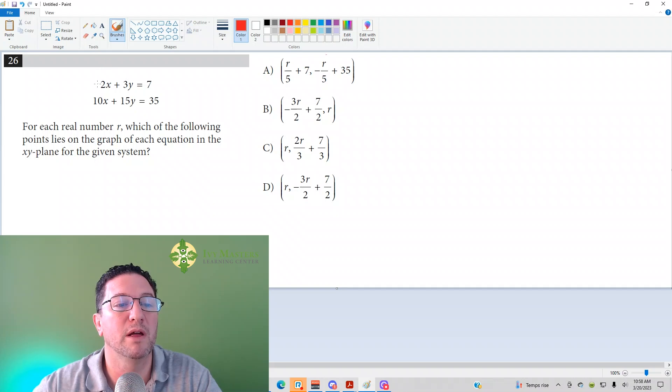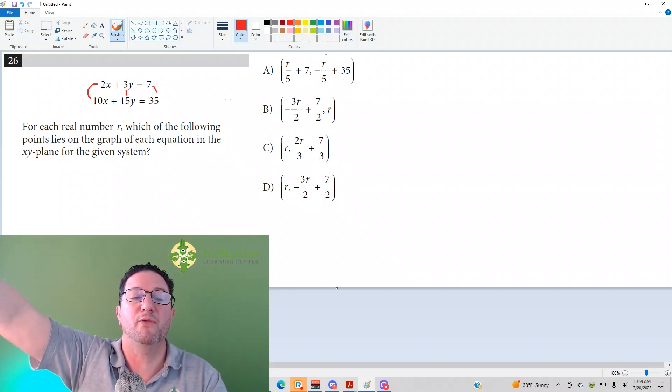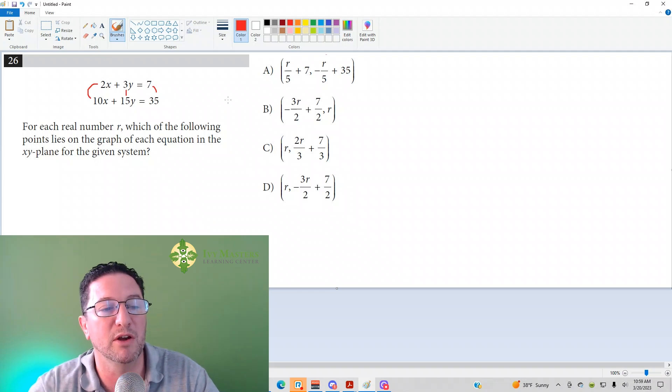So how do I get from 2X to 10X? I multiply by 5. How do I get from 3Y to 15Y? I multiply by 5. How do I get from 7 to 35? I multiply by 5. So since you multiply the entire first equation by 5 to get the second equation, or divide the second equation by 5 to get the first equation, there's infinitely many solutions. It's the same equation.